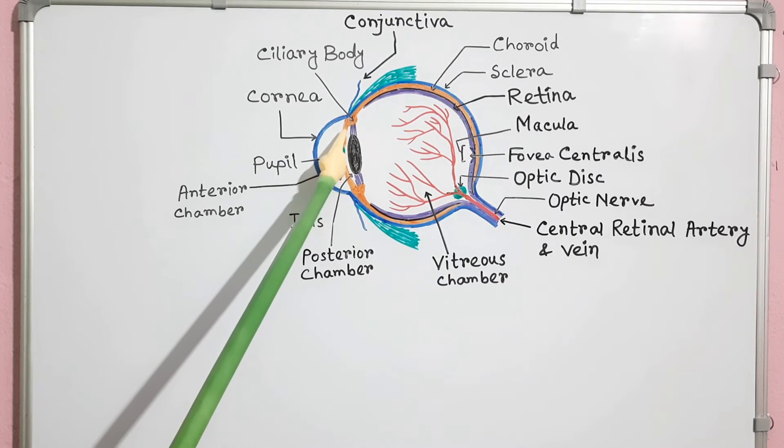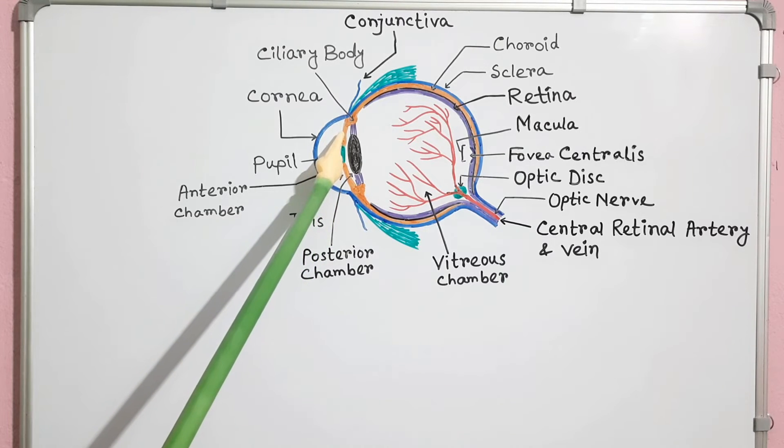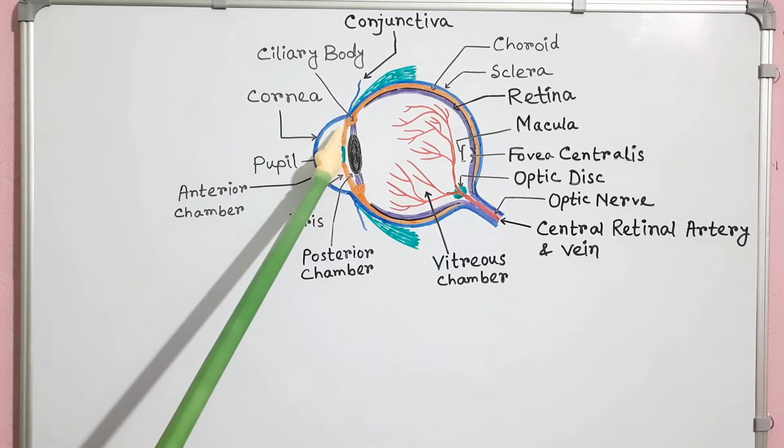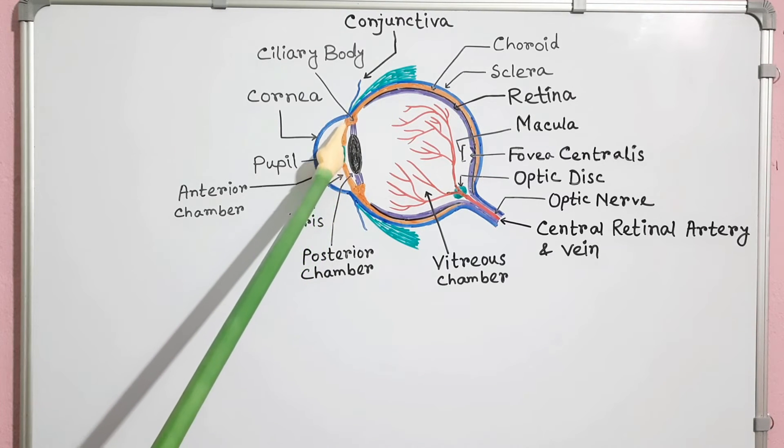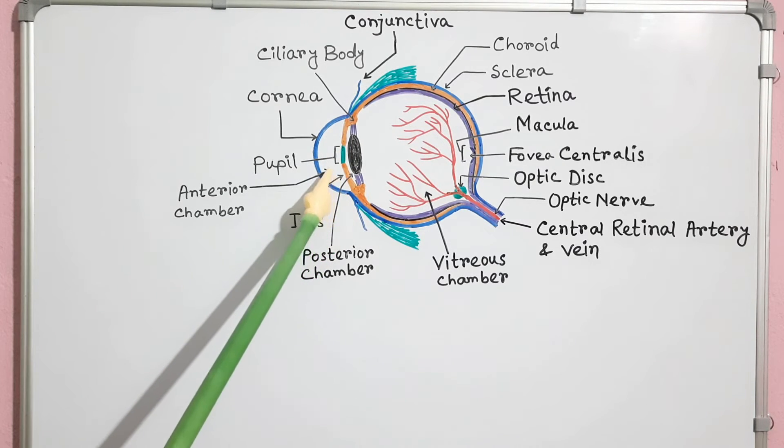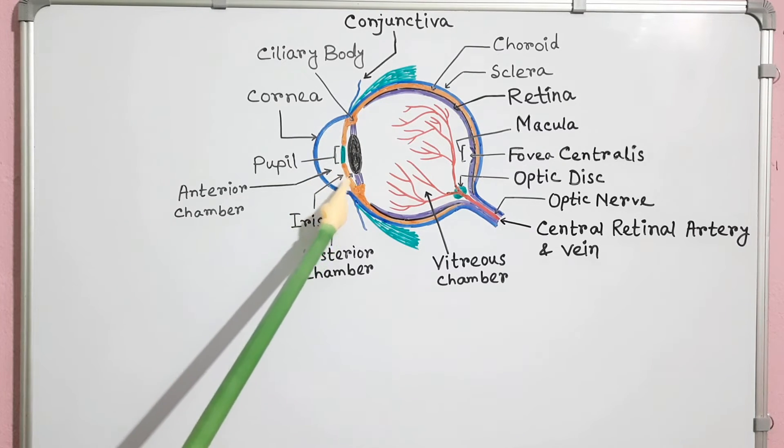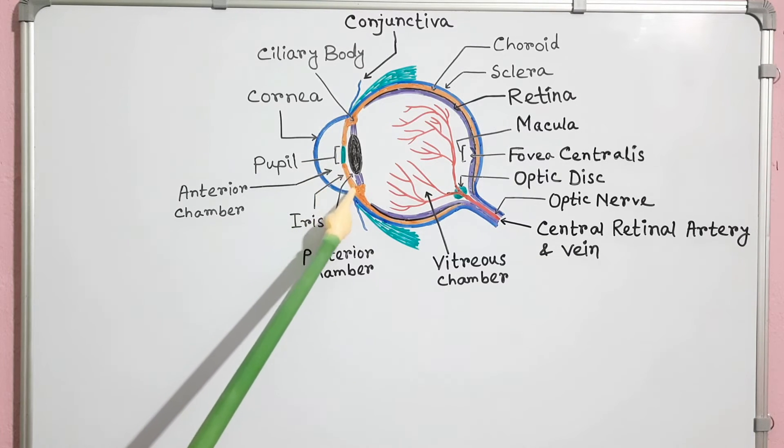This is the iris. It is the colored part of the eye. It extends over the anterior surface of the lens. The iris is a contractile structure consisting mainly of smooth muscle. It also contains melanin-containing pigment cells scattered in the connective tissue.